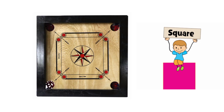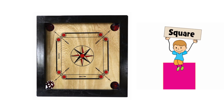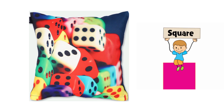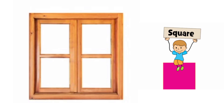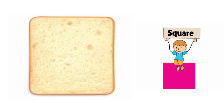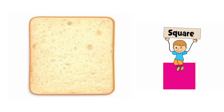I am square just like a carom board. I am square just like a cushion. I am square just like a window. I am square just like a bread slice.